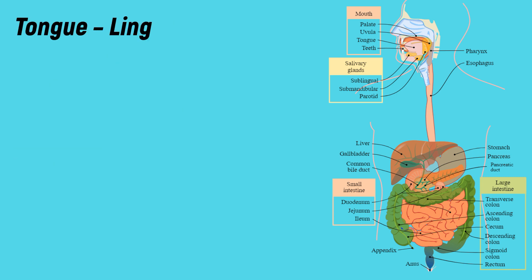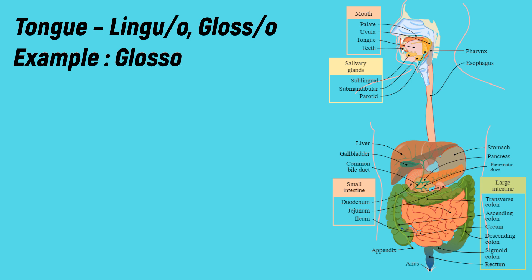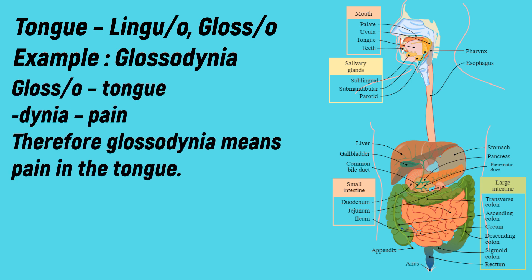Tongue: the medical term is 'linguo' or 'glosso'. Example: glossodynia. -Dynia means pain, and glosso means tongue. Hence, glossodynia indicates pain in the tongue.